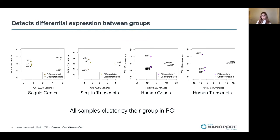We performed a principal component analysis to look at the variance between our samples, and found that all samples cluster by their group in PC1 at the gene and transcript level for both human and sequin counts. As shown in each of the four plots, a very high percentage of the overall variance is explained by the difference between undifferentiated and differentiated cells, and between mix A and mix B for the sequins.